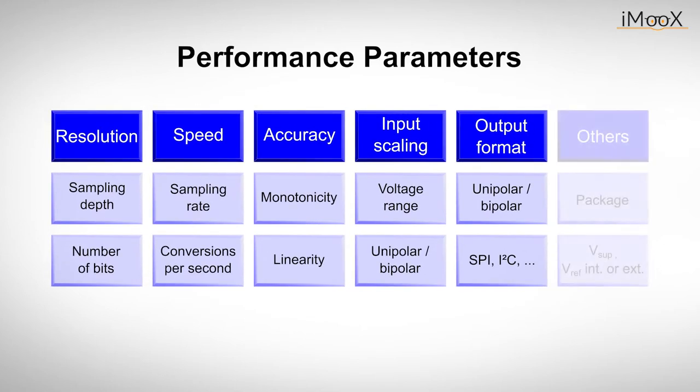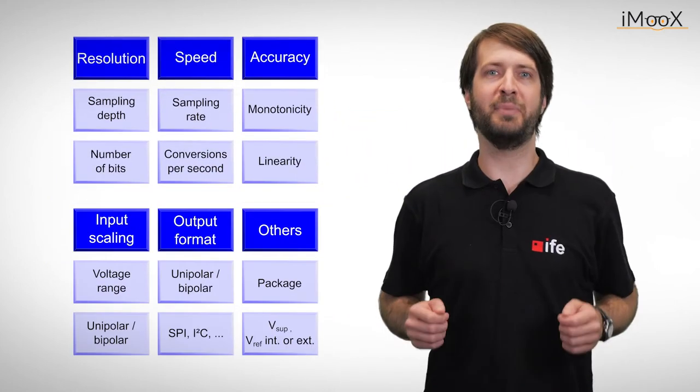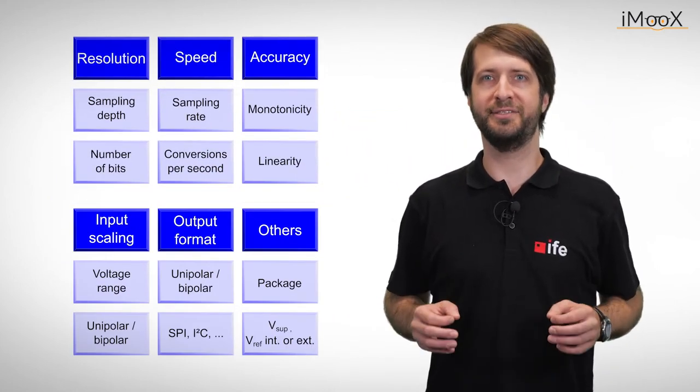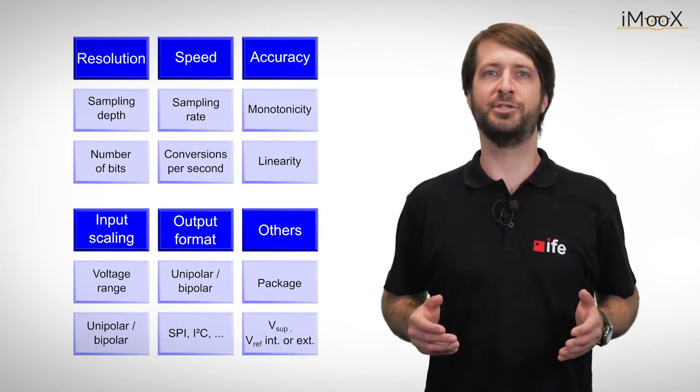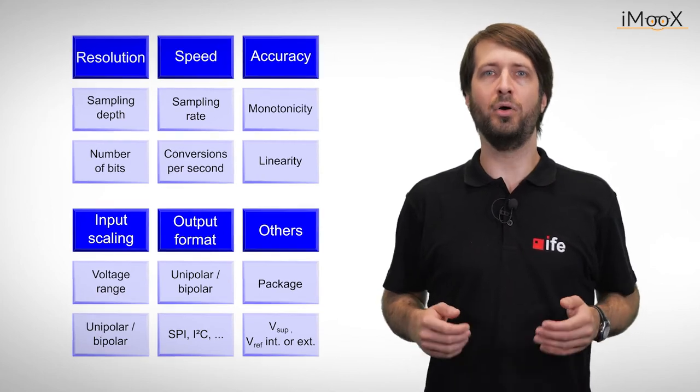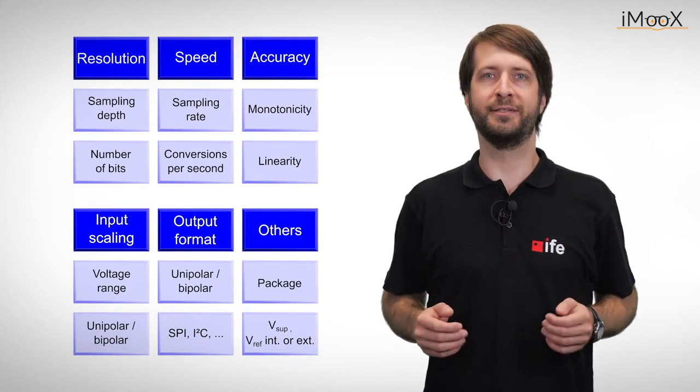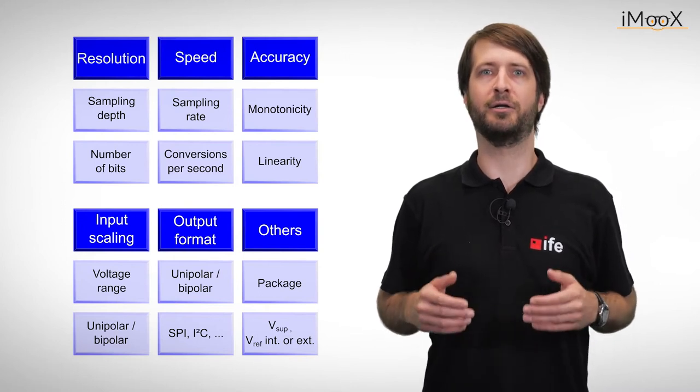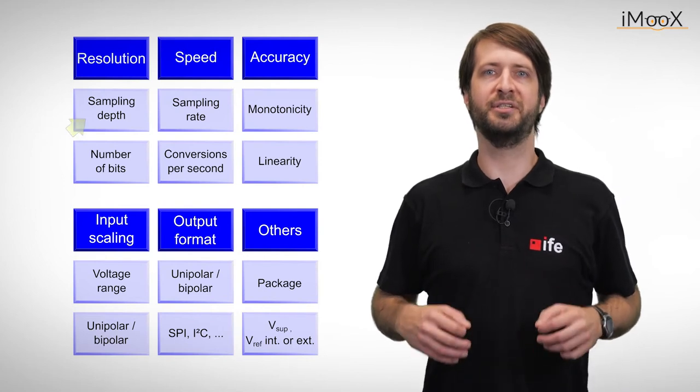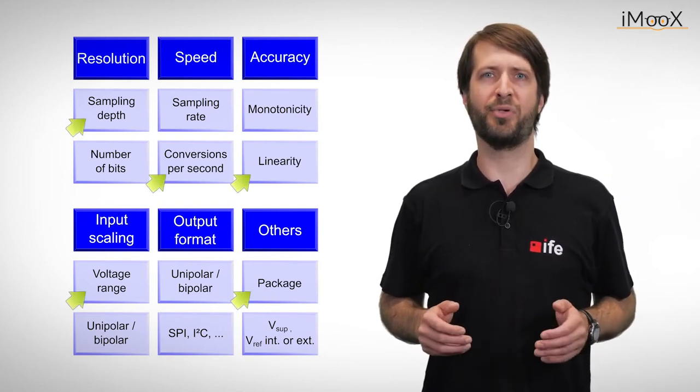But there are even more practical things to worry about if we build a circuit containing an ADC. One of the questions that might arise is what package do we have? What voltage supply do we need, or where does the reference voltage come from? Is it internally created, or do we need to provide it from outside? There are many basic things to think about in a standalone ADC, and we could go into even more detail about other features that an ADC could offer. All this should only show that there is a reason why millions of different ADCs are commercially available. But if we sort them out and consider all the features we need, we might end up with only a few choices.